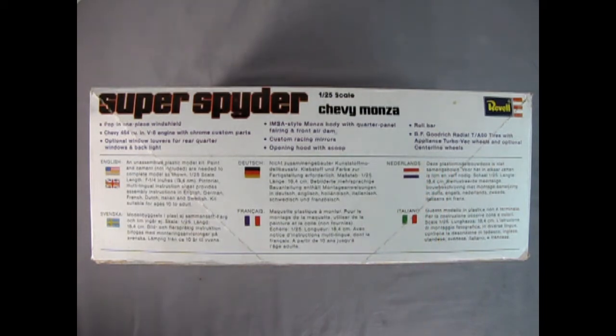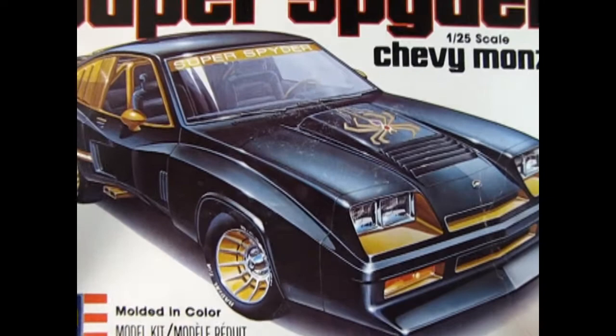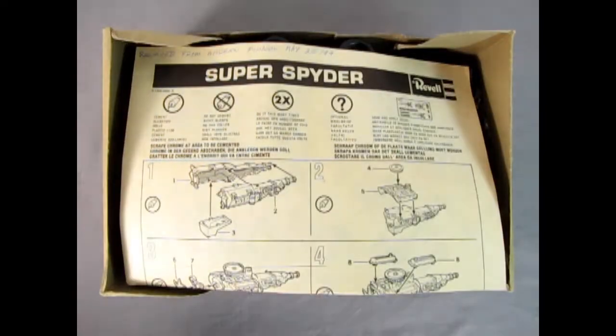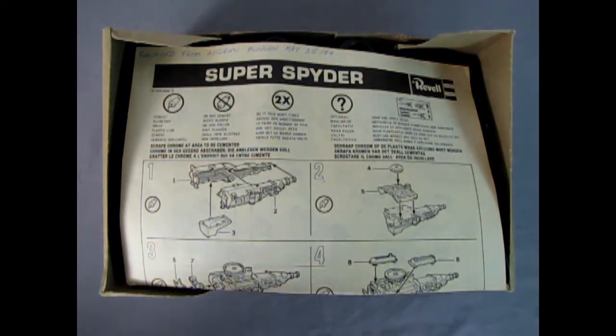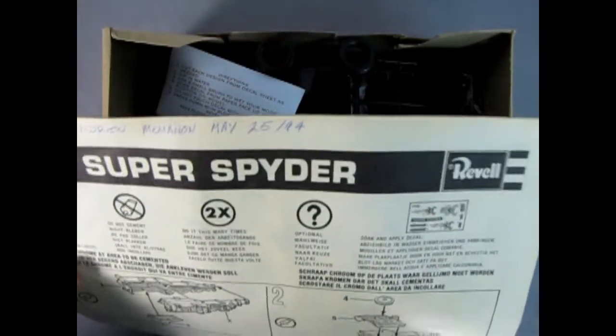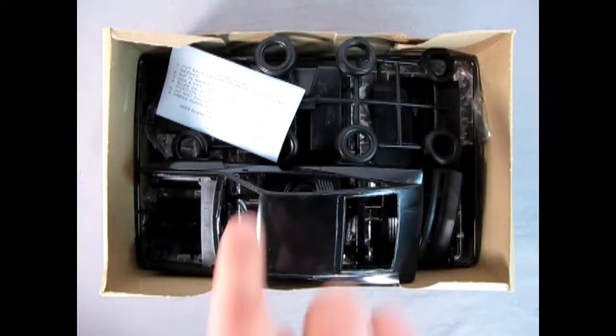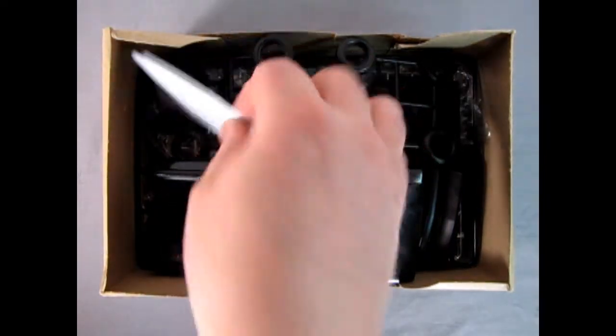Now we'll open the lid on our Chevy Monza Super Spider, and then after, Danny the dog can show you the instruction sheet. So here we have the vintage Revell instructions. I got this from my friend Andrew McMahon way back on May 25th, 1994. Here we have the decal sheet.